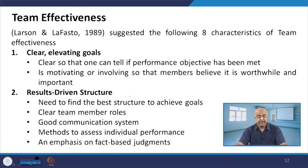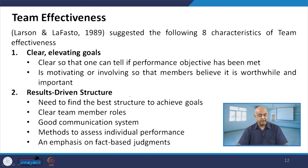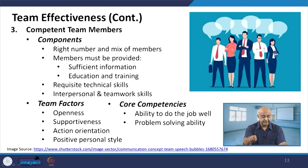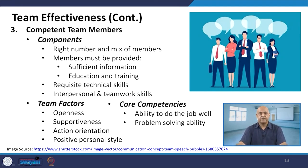Larson and Leifesto in 1989 suggested the following characteristics of team effectiveness: clear elevating goals — what is the performance, what are the objectives, and if the motivation is there they will achieve it. Results-driven structure — find the best structure to achieve the goals, clear team members' roles, good communication system, methods to assess individual performance and emphasis on fact-based judgments. Team effectiveness depends on the right number and mix of members, members being provided sufficient information, education and training, and requisite technical skills — interpersonal and teamwork skills always working.